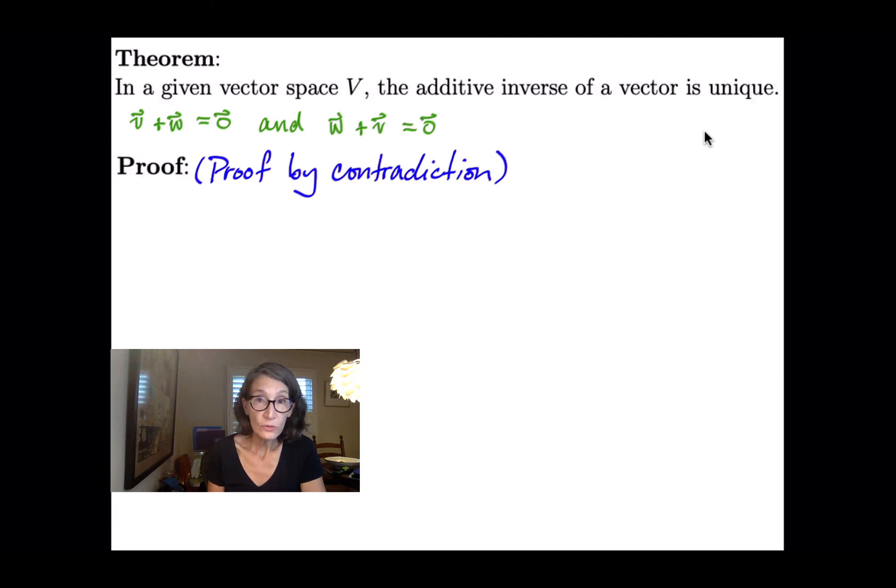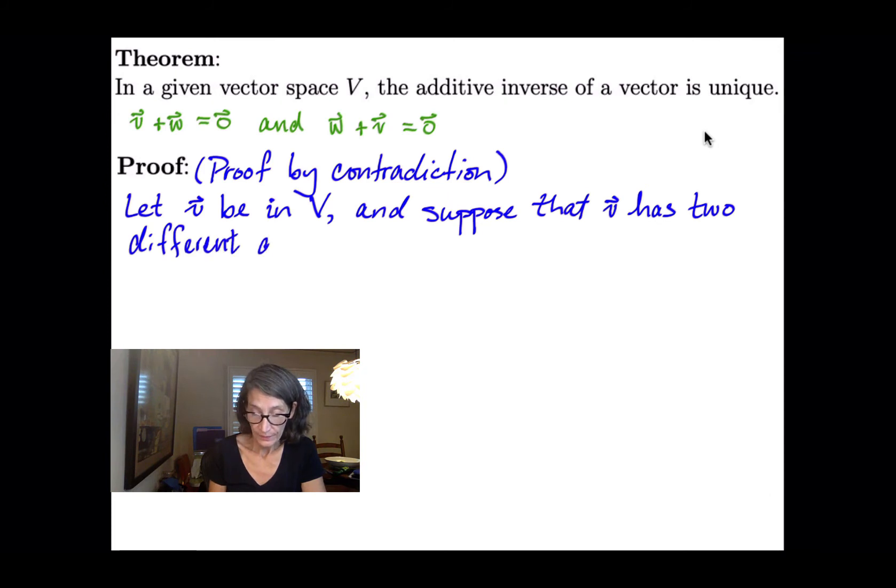And you conclude that your assumption was false. So here we're going to let v be any vector in the vector space V, and we're going to assume that v has two different additive inverses, and let's call them w1 and w2.